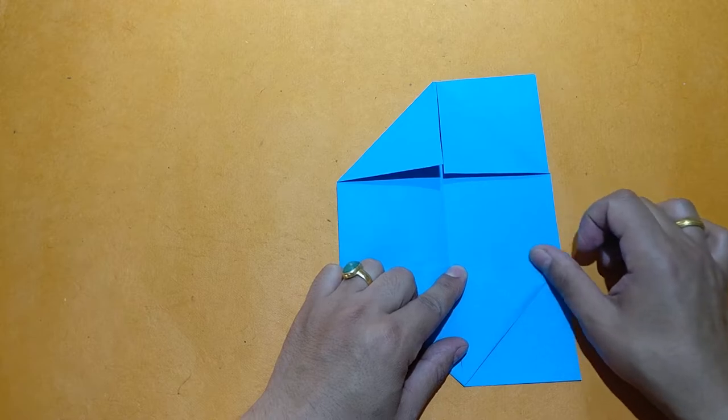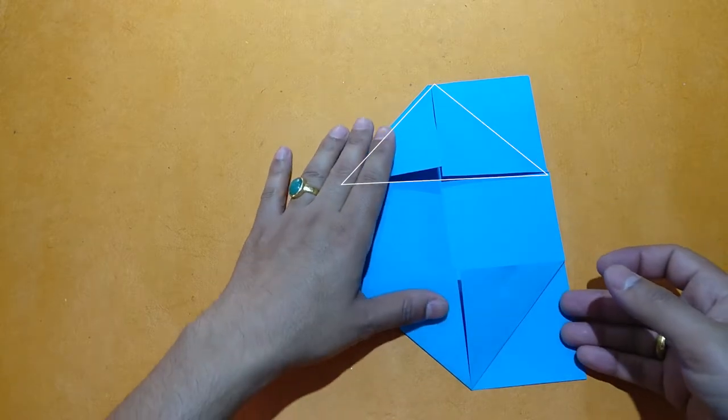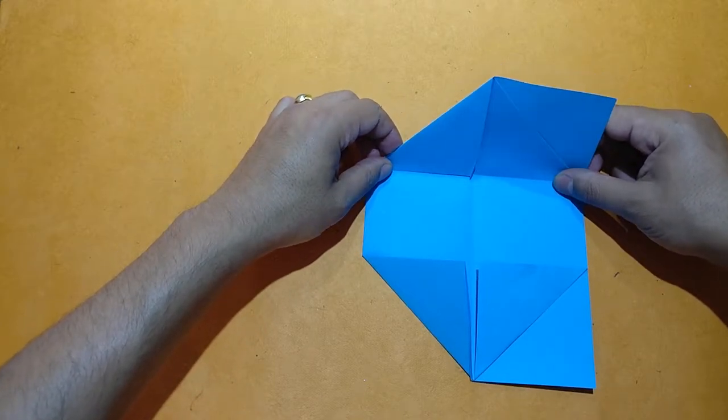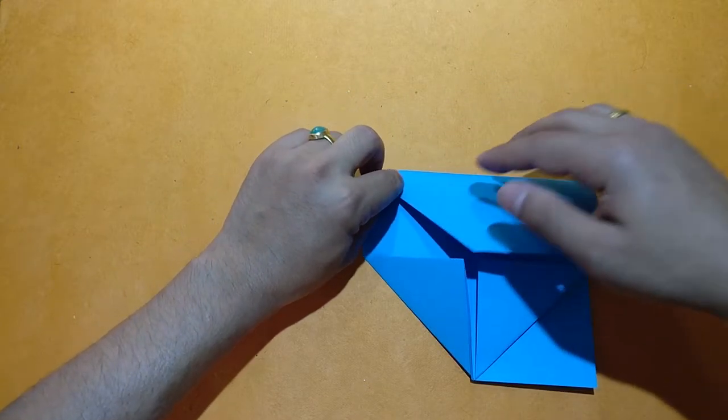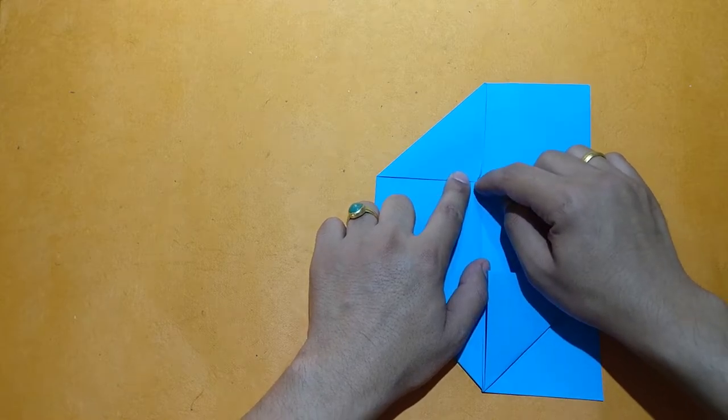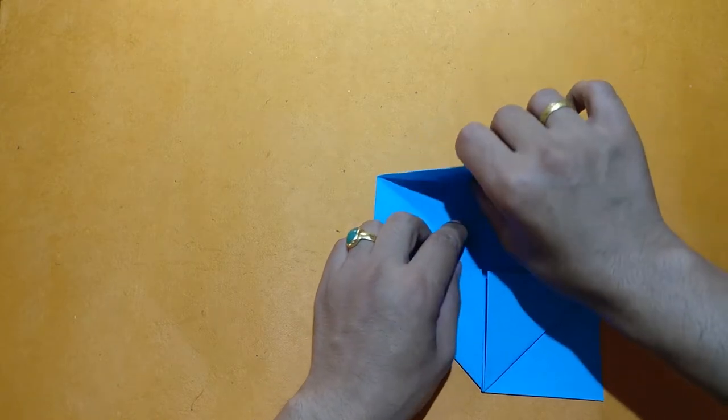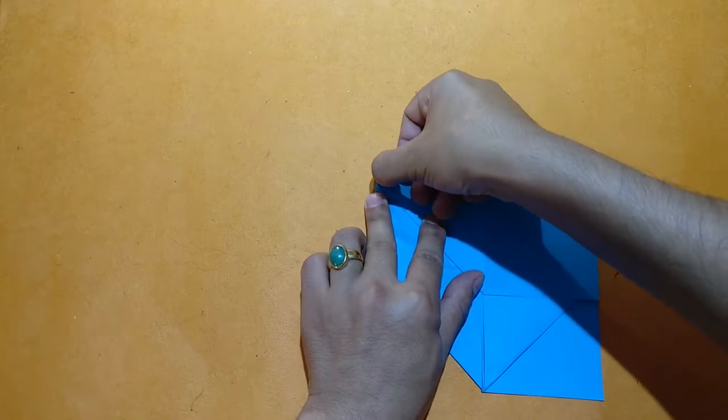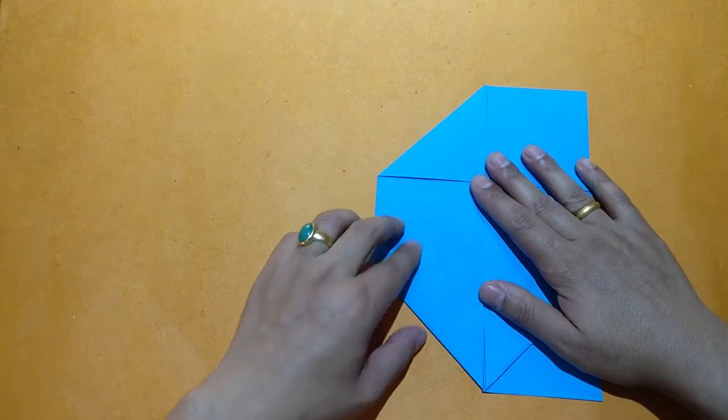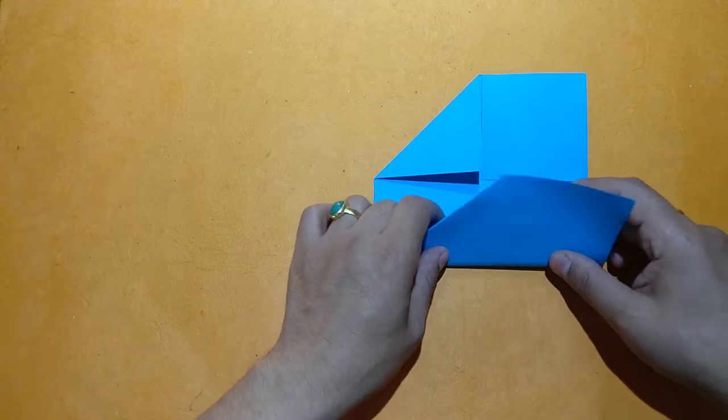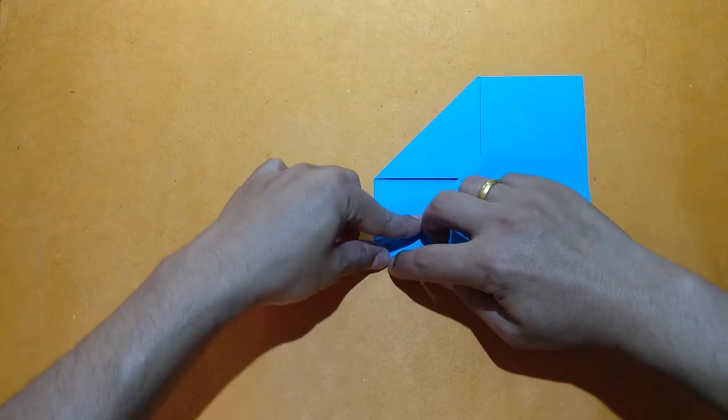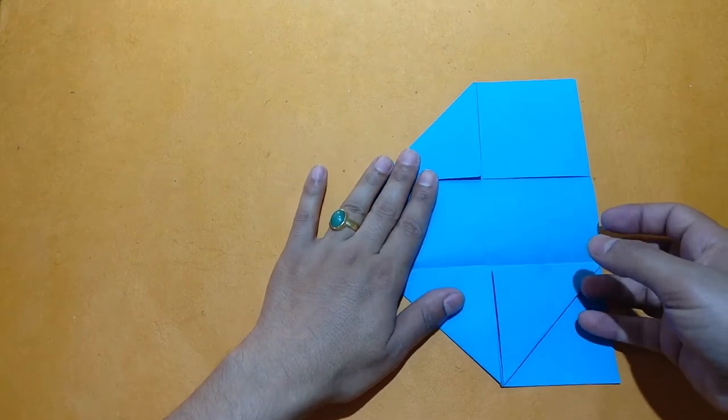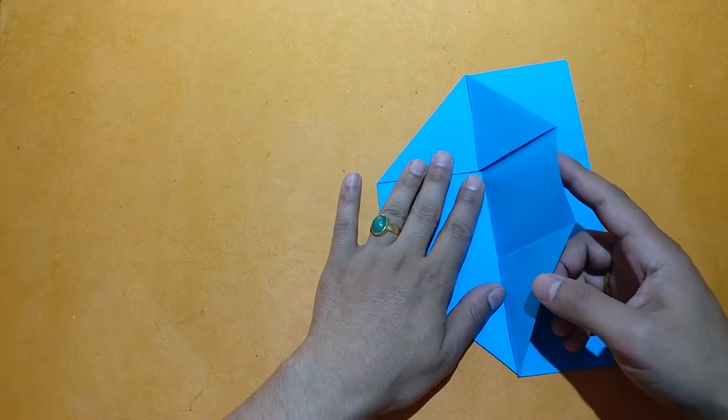As you can see, a triangle in the top. Fold the whole triangle upside down like this. Just fold it and repeat the process on the other side. Take the upper layer and fold it into half.